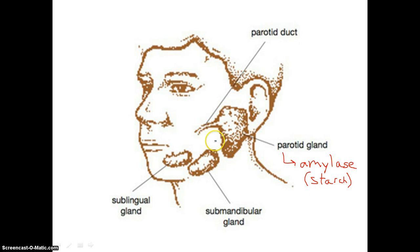So chemical breakdown of those types of foods actually begins in our mouth, this organ right here, with the aid of this really big salivary gland called our parotid gland.